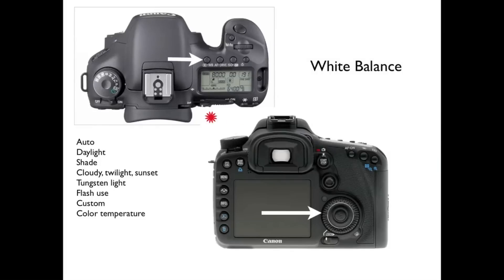For white balance, this is your white balance button — it's the same button you use to change your metering mode. Push that button, then move the dial on the back of the camera. Once you do that, you'll be able to see your selected white balance in your LCD monitor. You can select any one of these options and it'll present itself right in the middle of your LCD monitor.